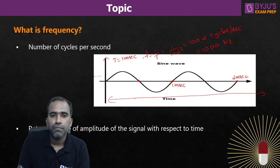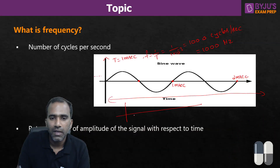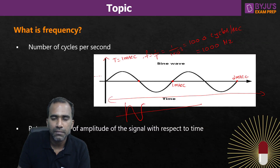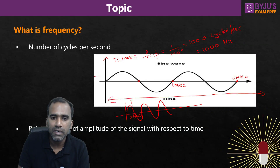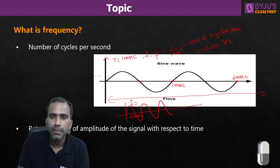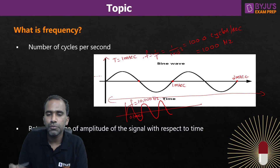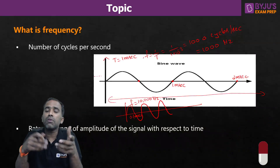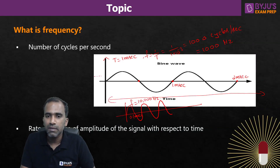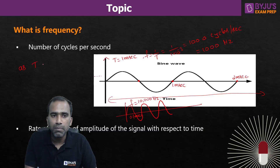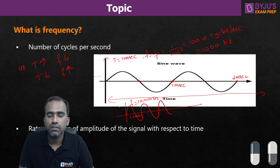Let us make more observations. What if we decrease the time period — say, instead of 1 millisecond, we make it 0.1 milliseconds? Then the frequency becomes 10,000 Hertz or 10,000 cycles per second. If you reduce the time period by 10 times, the number of cycles fitting in 1 second increases by 10 times, so frequency increases by 10 times. As time period increases, frequency decreases; as time period decreases, frequency increases.